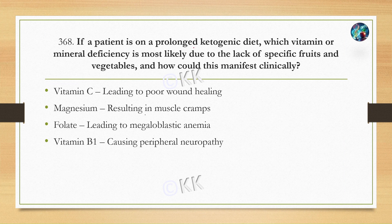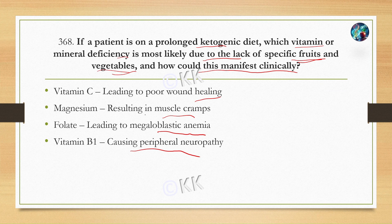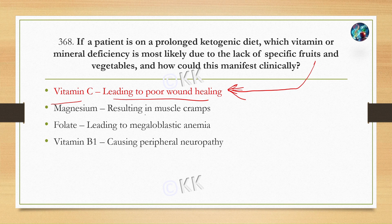If a patient is on a prolonged ketogenic diet, which vitamin or mineral deficiency is most likely due to the lack of specific fruits and vegetables, and how could this manifest clinically? Option A: Vitamin C, leading to poor wound healing. Option B: Magnesium, resulting in muscle cramps. Option C: Folate, leading to megaloblastic anemia. Option D: Vitamin B1, causing peripheral neuropathy. The correct option is option A — Vitamin C, leading to poor wound healing. Vitamin C is obtained specifically from fruits and vegetables. Magnesium, folate, and Vitamin B1 can be obtained from other sources beyond fruits and vegetables, so the question specifically targets fruit and vegetable-related deficiencies.